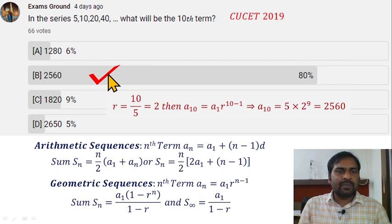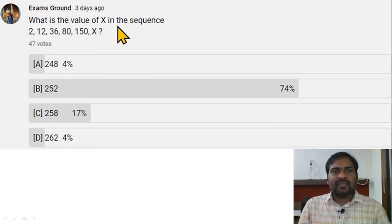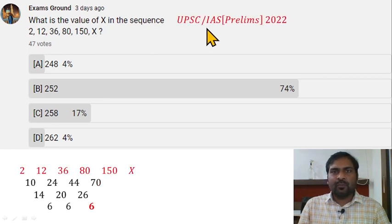Option B is correct here. What is the value of X in the sequence? A very interesting question, and this question is taken from UPSC IAS examinations. Very interesting question. So it is 2, 12, 36, 80, 150, X.